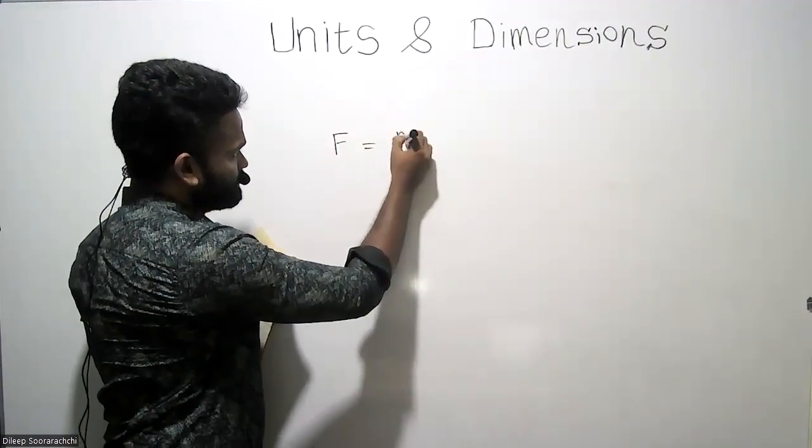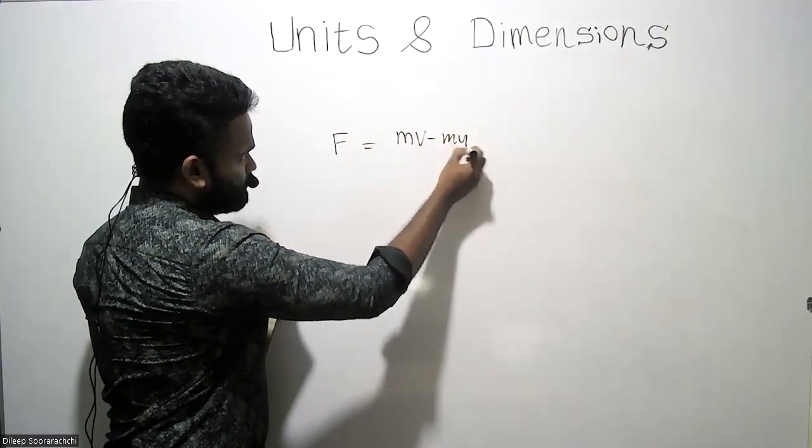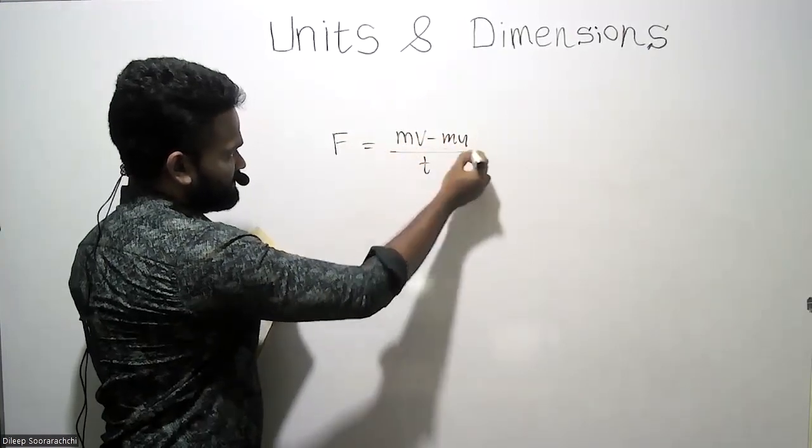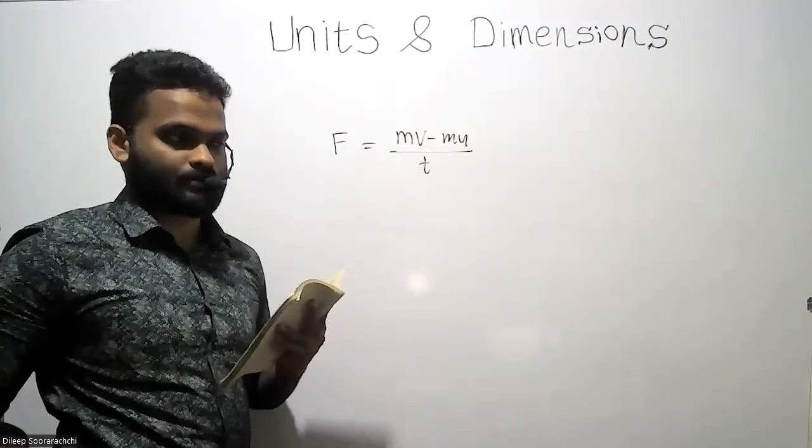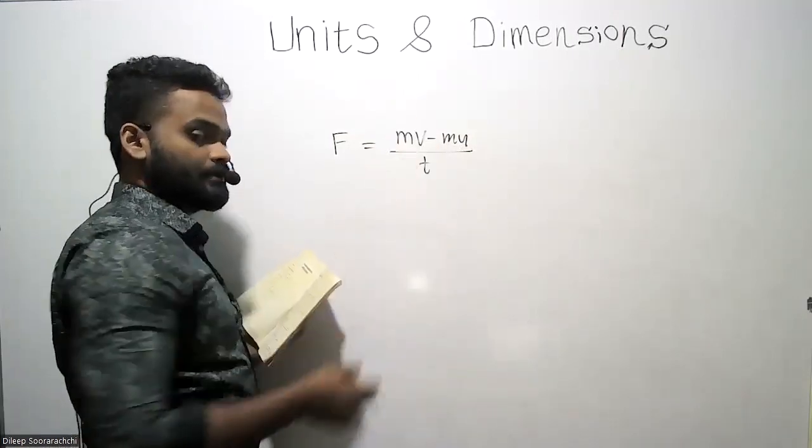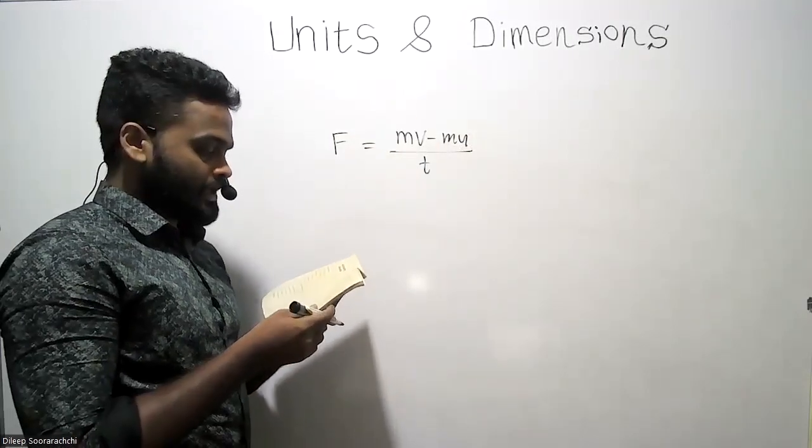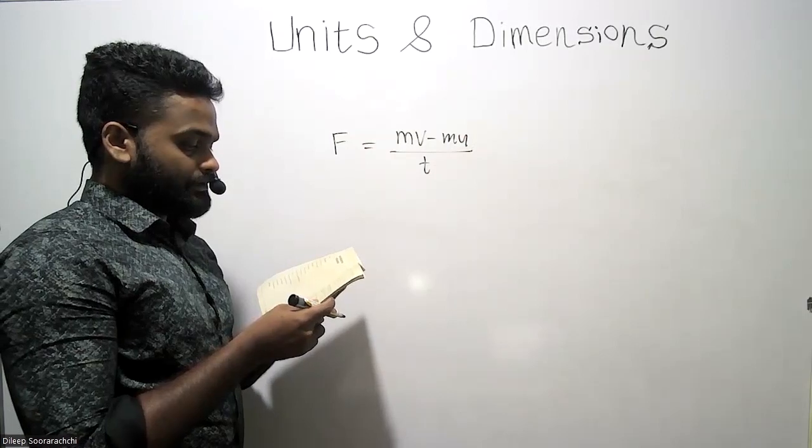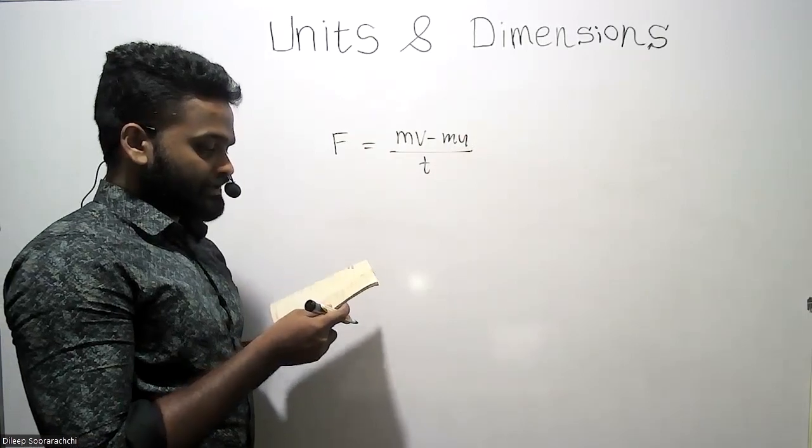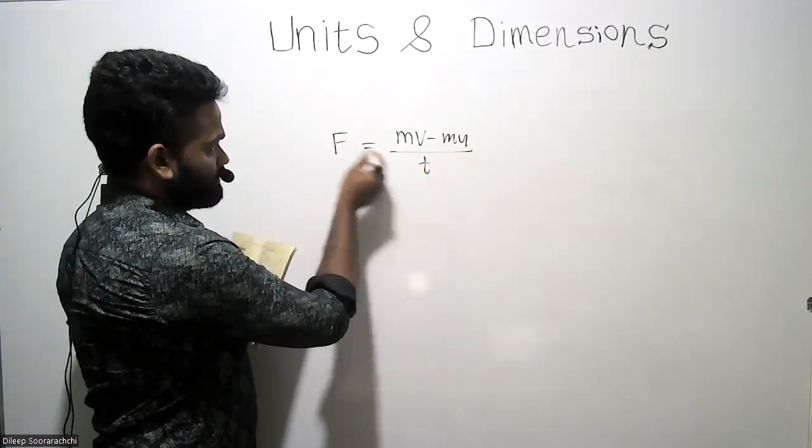There's this force equals change of momentum divided by time. This is the F equals ma equation, right? This is how we derive F equals ma. Force by time - you have to multiply force by time, so just cross multiply this.